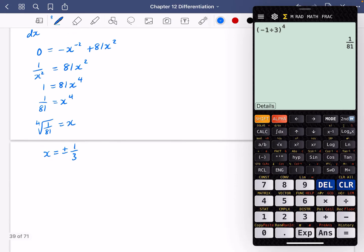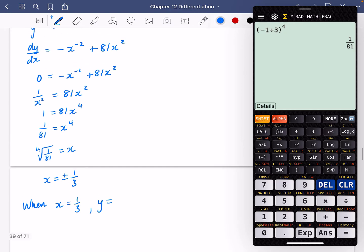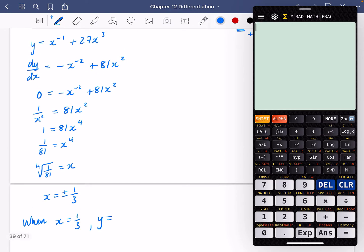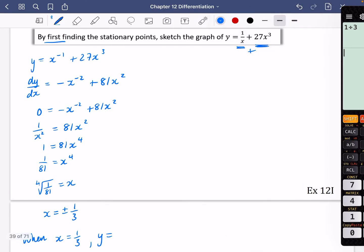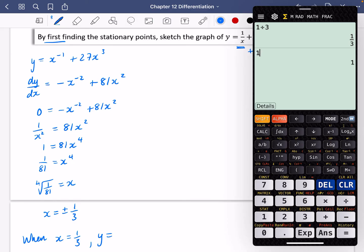So I'm going to keep going down the page. When x is equal to a third, let's find out what y is. So I'm going to put that into the equation here. So I'm going to do 1/a third plus 27 times a third cubed. You get four.